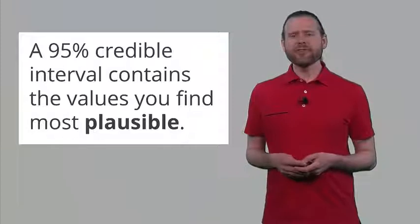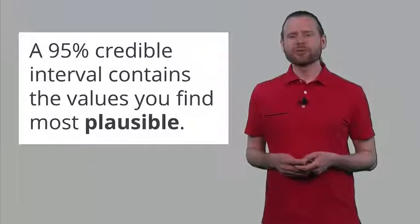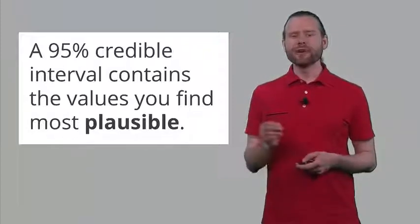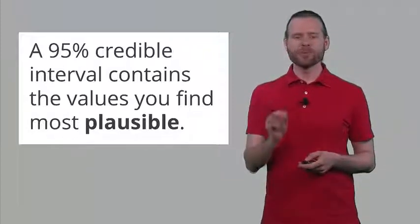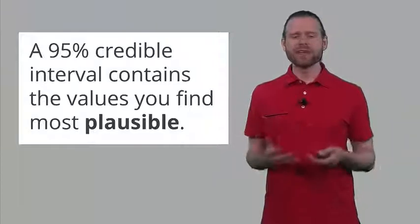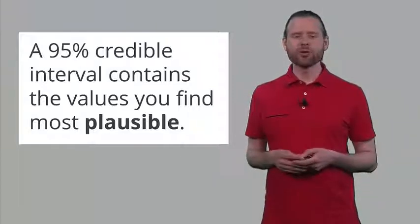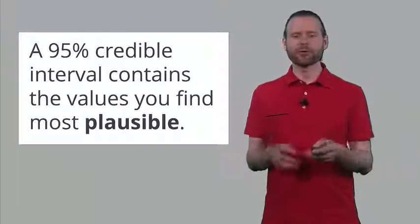So this 95% credible interval contains the values that you find most plausible — it is all about expressing and quantifying your belief in specific values. In this lecture we have seen how you can use Bayesian statistics to quantify your prior beliefs, collect data, and then update your beliefs based on the data that you have observed.